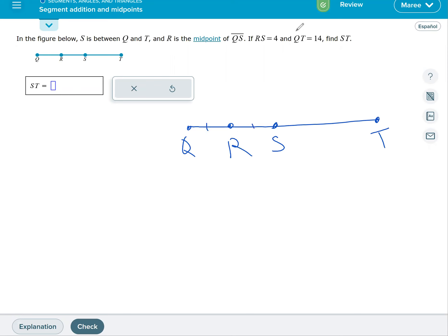So those two are the same. RS is four. So from here to here is four, which means QR is four. Those two are the same by definition of midpoint and QT. So the entire thing is 14.